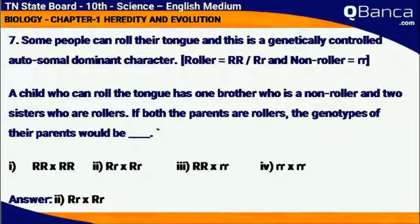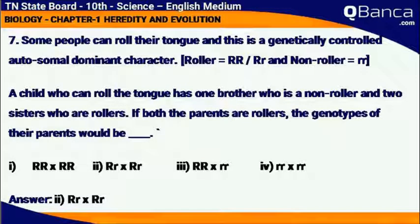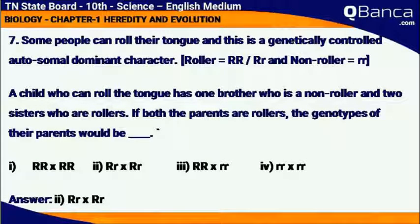Some people can roll their tongue and this is a genetically controlled autosomal dominant character. Roller is equal to RR or Rr, and non-roller is equal to rr. A child who can roll the tongue has one brother who is a non-roller and two sisters who are rollers.